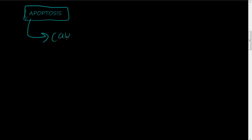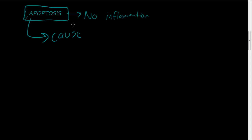What causes apoptosis? There are several causes. But first of all, one thing to remember is that apoptosis does not cause inflammation — there is no inflammation in apoptosis. That's only in necrosis. Apoptosis is more of a programmed cell death. When cells have outlived their usefulness, they will undergo apoptosis and die.